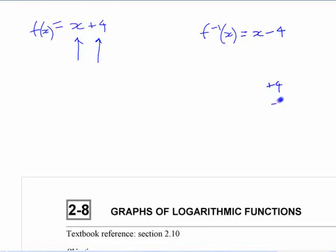Adding 4 and subtracting 4 are inverse operations. They cancel each other out, right? If you start with a number, you add 4, you subtract 4, you get what you started with.